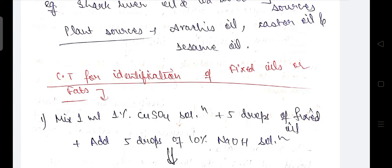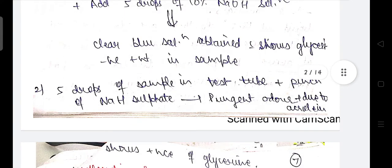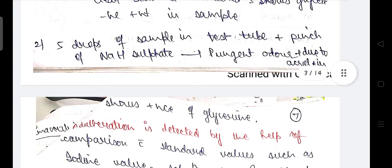Chemical tests for fixed oils and fats: Mix 1 ml of 1% CuSO4 solution with 5 drops of fixed oil, then add 5 drops of 9% NaOH solution. A clear blue solution will form, showing glycerin is present in the sample. In another test, place 5 drops of the fixed oil sample in a test tube and add a pinch of NaOH sulfate; a pungent odor will be produced due to the presence of acrolein.